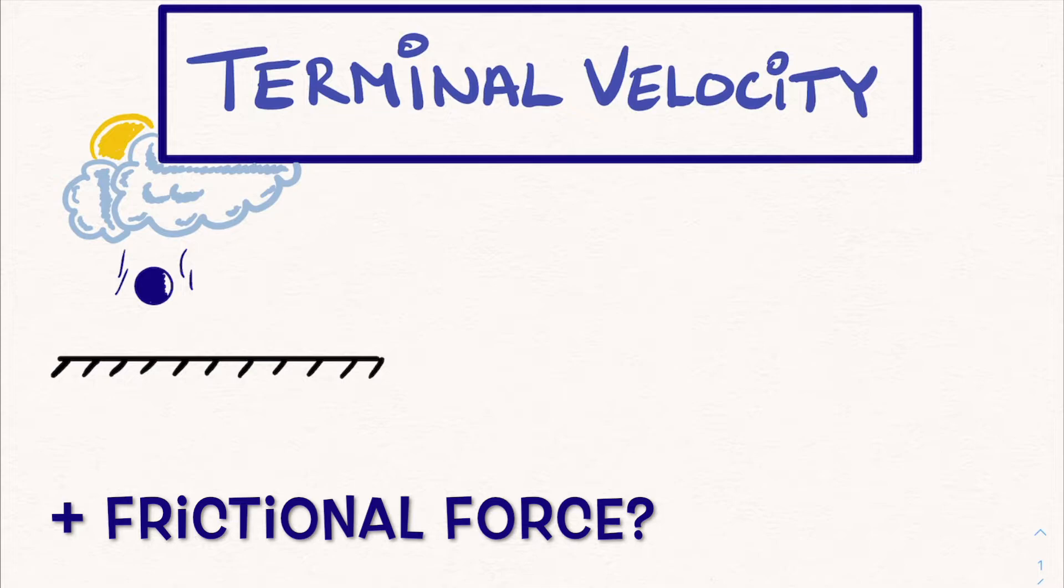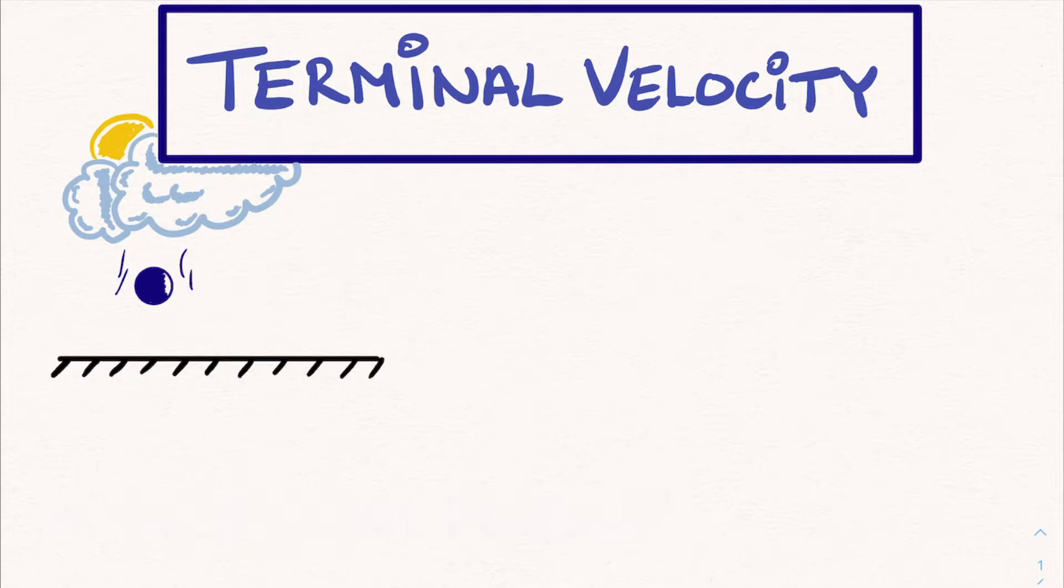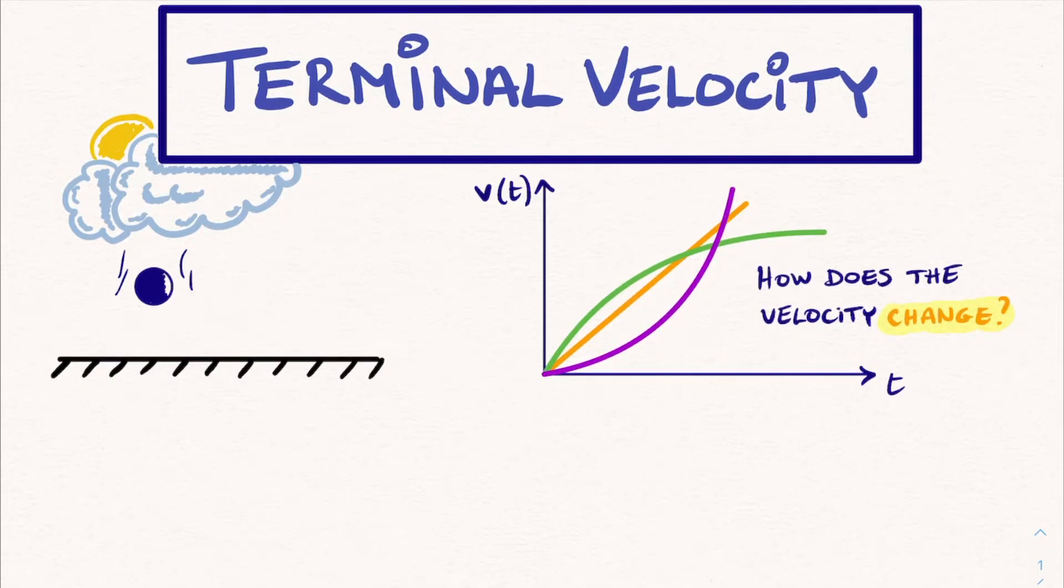But what if we now include the frictional force acting on the object by the surrounding air, which is basically the force that results from the collective collisions of air molecules with the object? This force tries to slow down the object. In fact, the higher the object's velocity, the larger the frictional force that tries to slow it down. Given these forces battling it out, what is the exact time evolution of this object's velocity? Will it just keep on increasing with a constant acceleration, or will it slow down after a while and even at some point become constant? This is what we will find out.